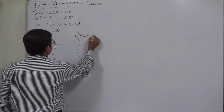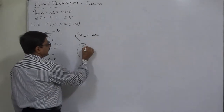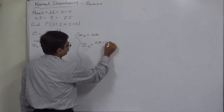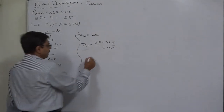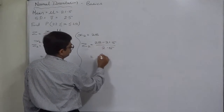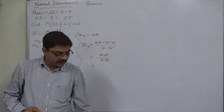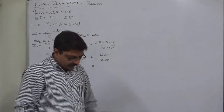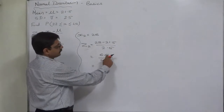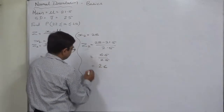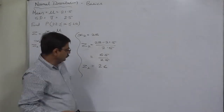Now let's take x equals 28. The z-score will be 28 minus 21.5 divided by 2.5, which is positive 6.5 divided by 2.5. That comes to 2.6 — again positive. So z1 is positive 0.2 and z2 is positive 2.6.